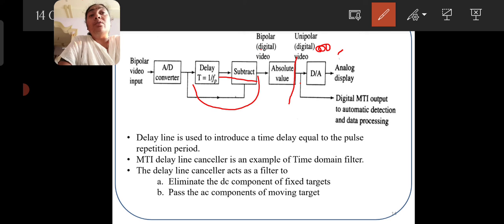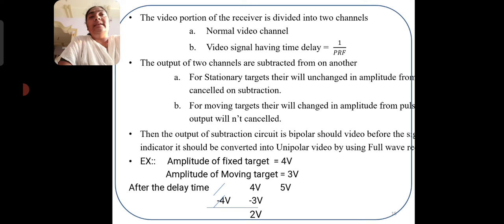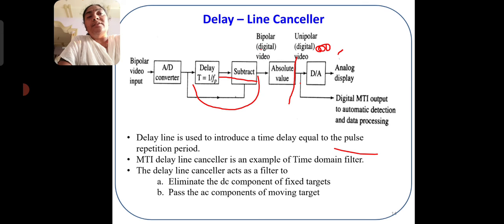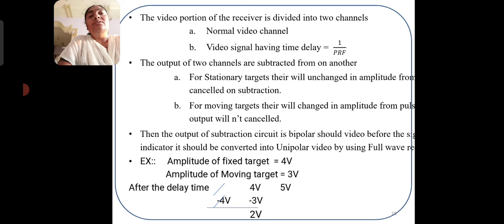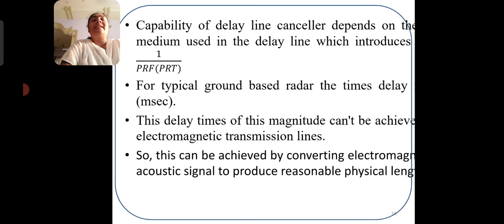To explain how the delay line canceller eliminates stationary targets: if the amplitude of a fixed target is 4 volts and the moving target is 3 volts, after the delay time the fixed target remains 4 volts. The moving target, however, changes to 5 volts. The subtractor subtracts the two signals, giving a result such as minus 2 volts for the moving target, thus eliminating the fixed target amplitudes. For typical ground-based radars, the delay time is in milliseconds, which cannot be achieved with electromagnetic transmission lines, so acoustic signals are used to produce a reasonable physical length.